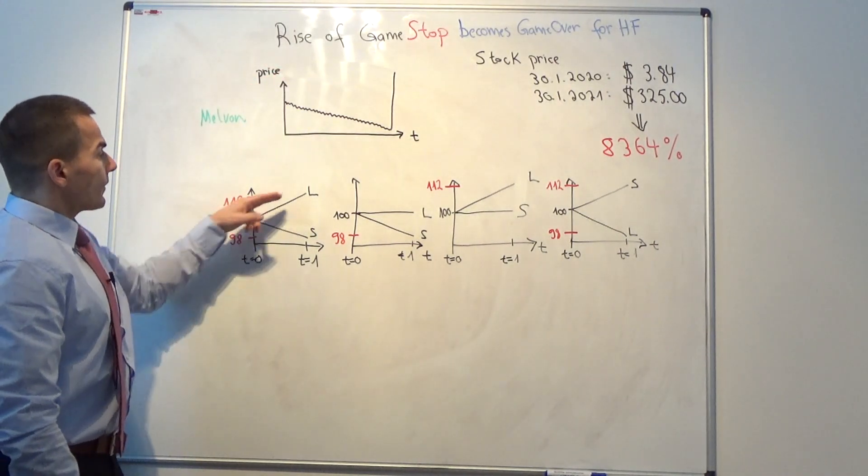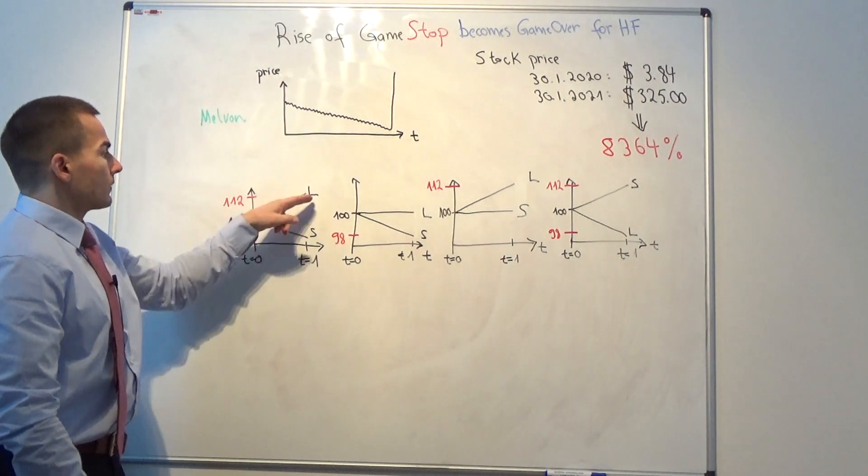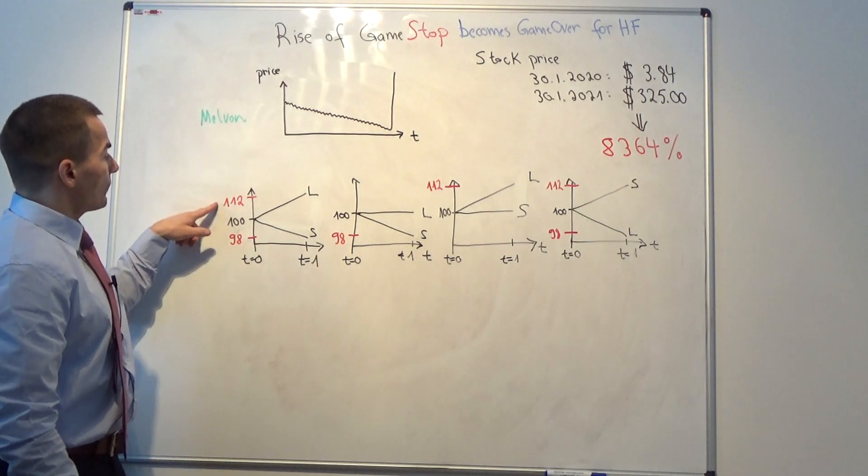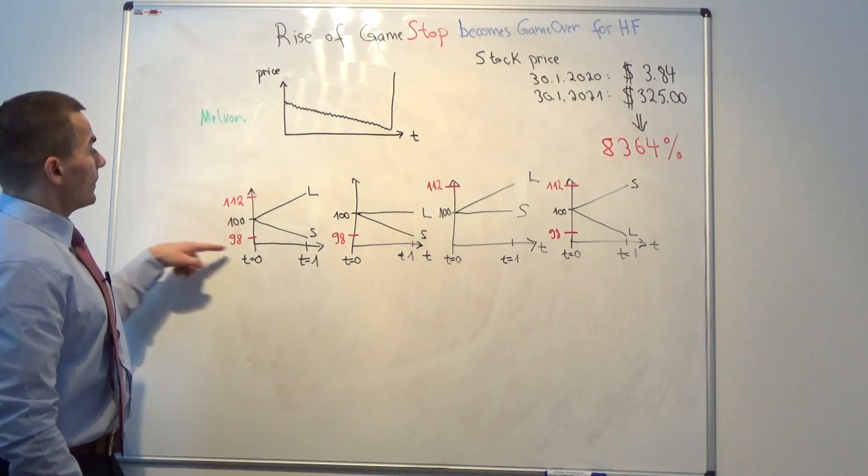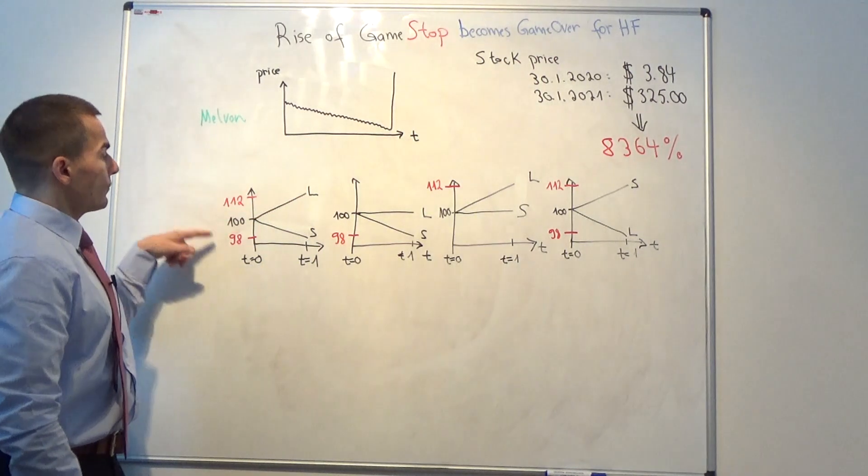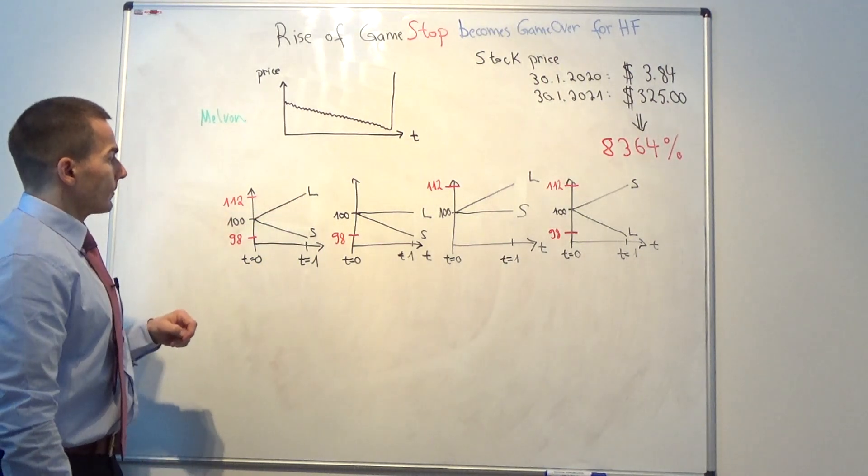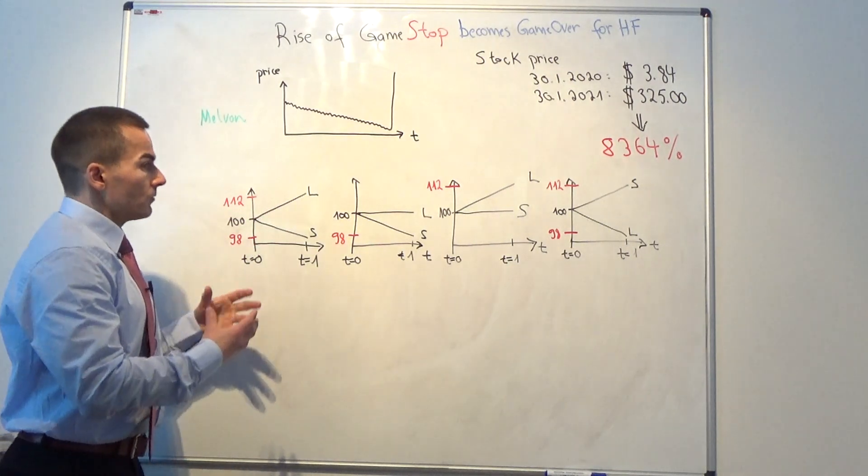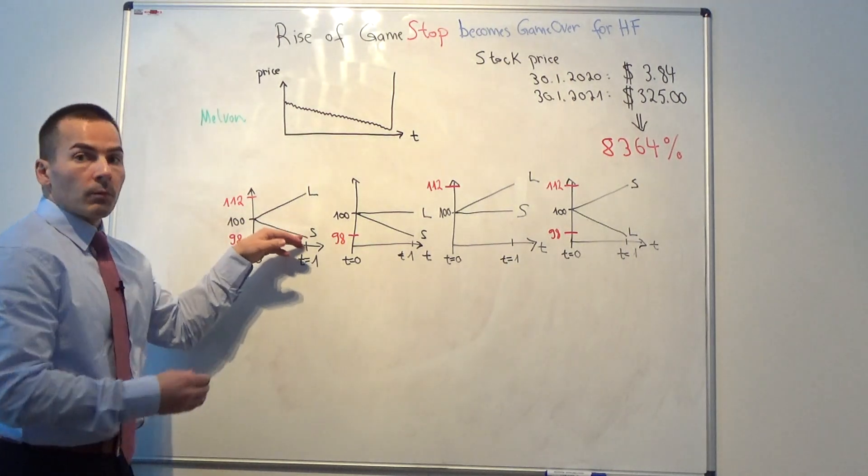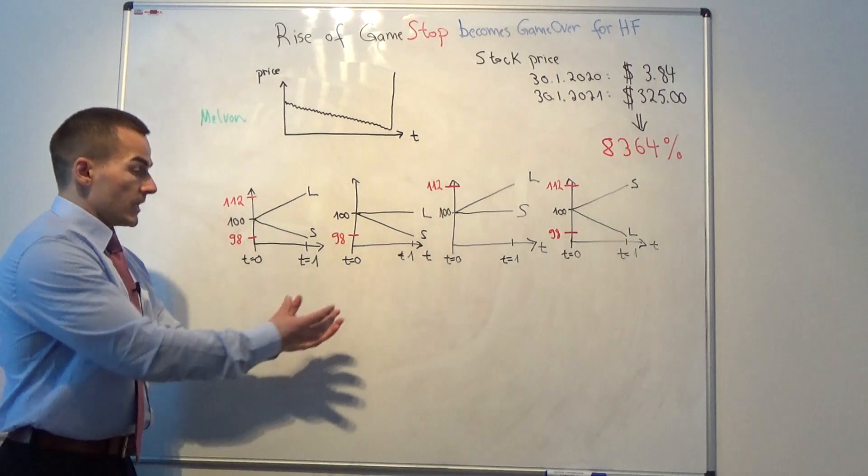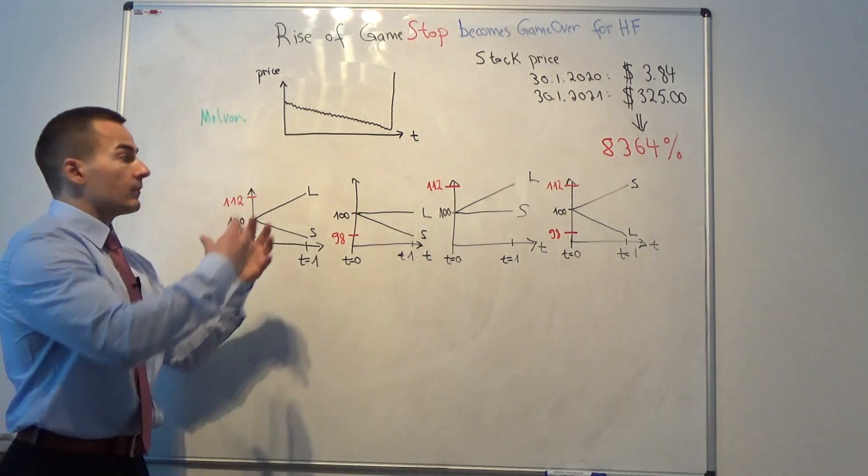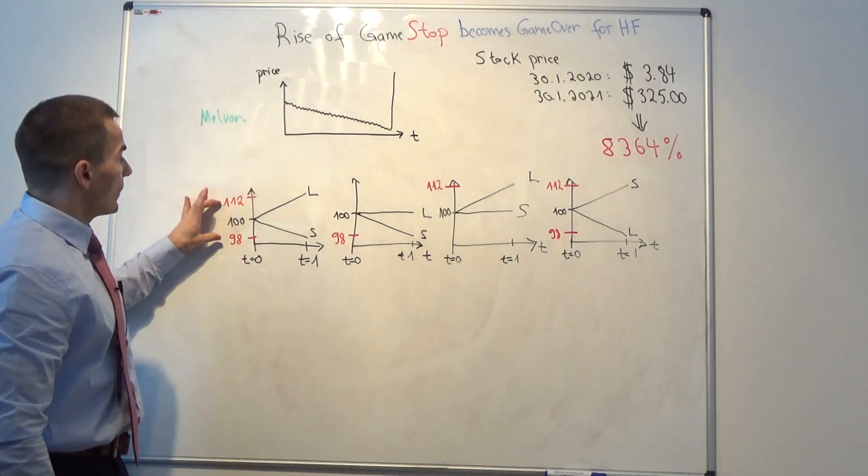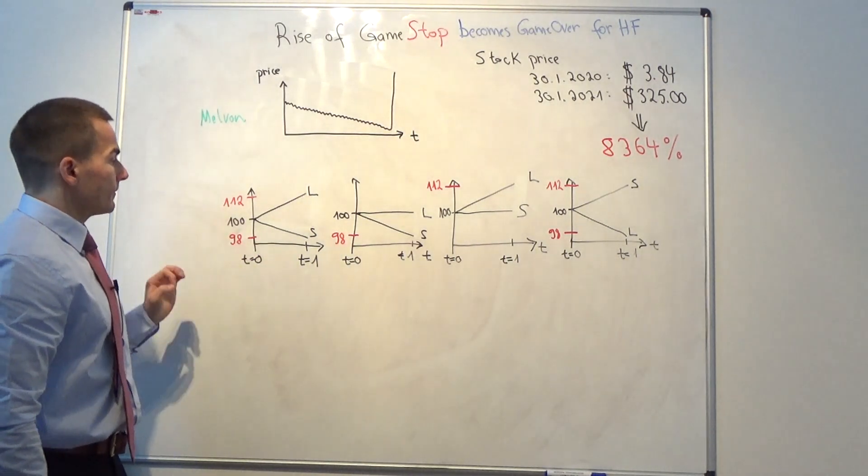So what hedge funds are usually doing is, they take this money, so they borrow stocks, they short sell them, they take this money, this 100 that they got for the stock at time T is 0, and they invest it in other stocks that they expect to rise. Alright? So if the other stock, which is your long position, is called long position. If the other stock rises from 100 to 112, the difference is 24. It's 24%. Right?